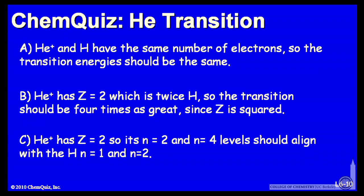Or C: He plus has Z equal 2, so its n equal 2 and n equal 4 levels should align with the H n equal 1 and n equal 2 levels. Think about those three possibilities and make another selection.